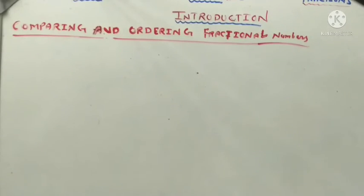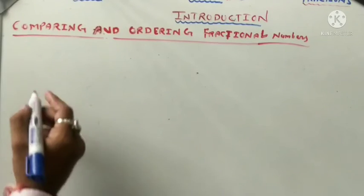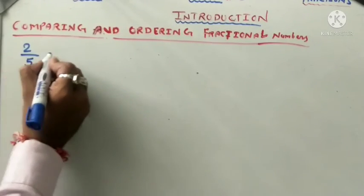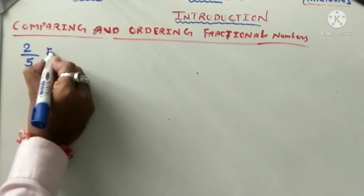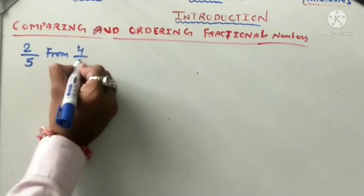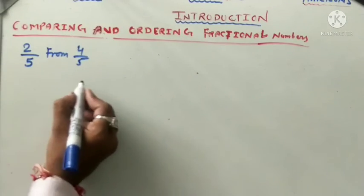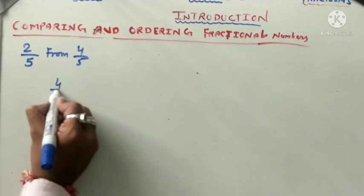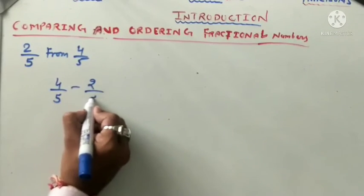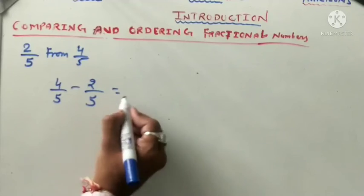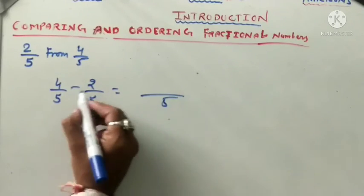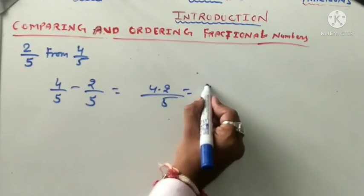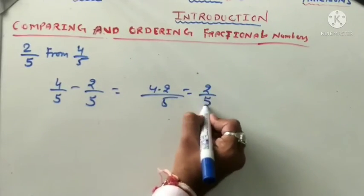Now we have learned addition. Let us look at subtraction of fractions. When the denominators are the same, we subtract directly. For example, 4 upon 5 minus 2 upon 5 — denominator stays 5, and 4 minus 2 equals 2 upon 5.